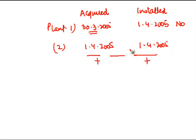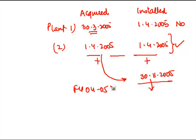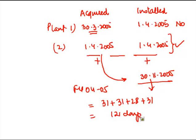Second example: acquisition happened on 1st April 2005 and installation also happened on the same date. Since both acquisition and installation happened after 31st March 2005, I am entitled to additional depreciation. Now if, for example, acquisition happened on 1st April 2005 but installation happened on 30th November 2005, then for financial year 2004-05 the asset is put to use only from December — that is 31 days, plus January, February, and March — totalling 121 days.